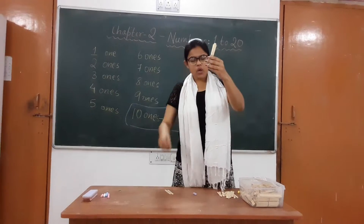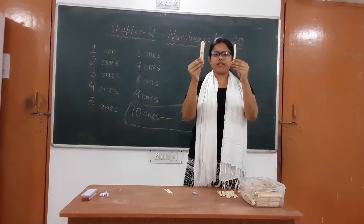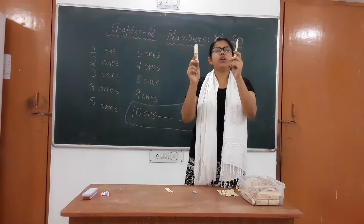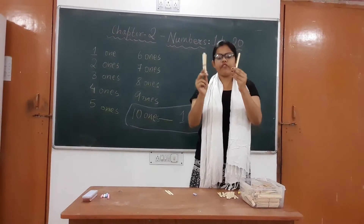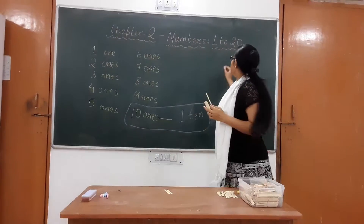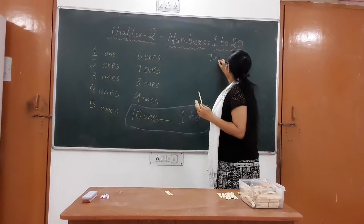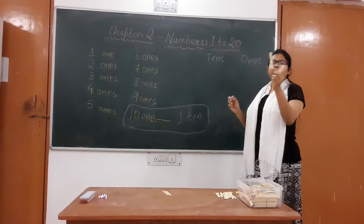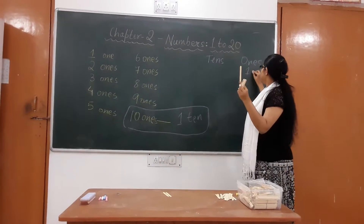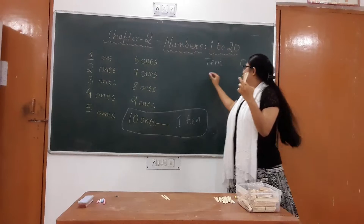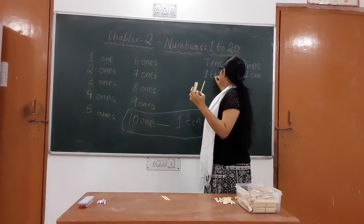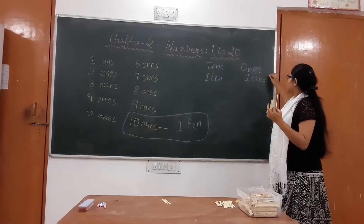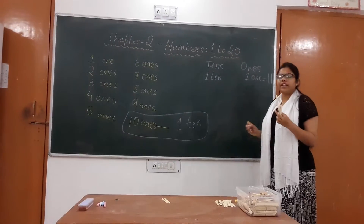Now, after 1-ten, how many is this? 1-ten and how many more? 1-one. So, it is which number? 11. Children, look here — 10s and 1s. I have 1-one and 1-ten. So, it is number 11.